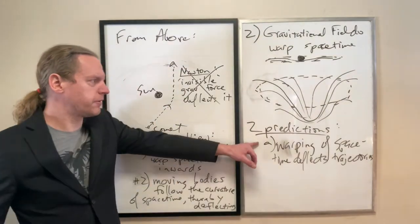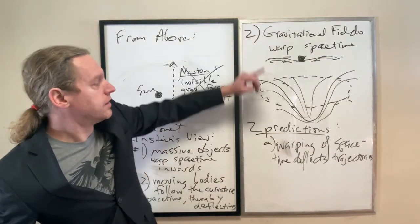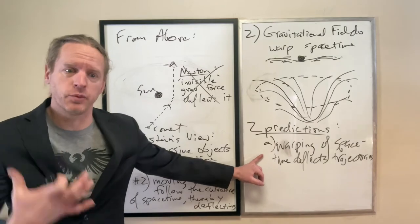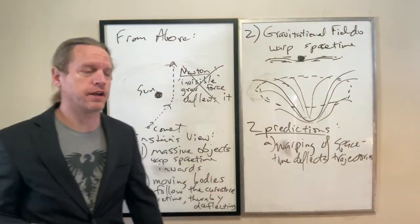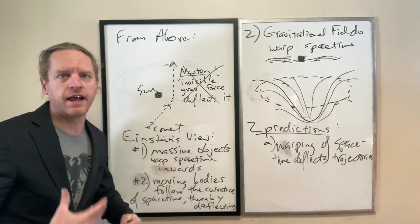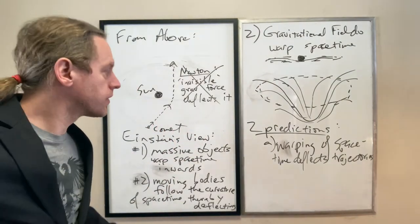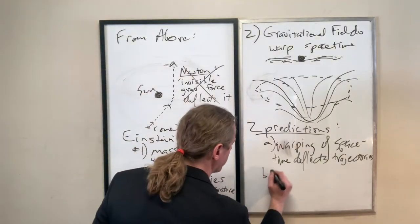And that's what we perceive as the deflected trajectory. So this is that first prediction here, then, that the warping of space-time is actually physically what's causing trajectories to be deflected, not some invisible gravitational force that seem to work at infinite speeds even.